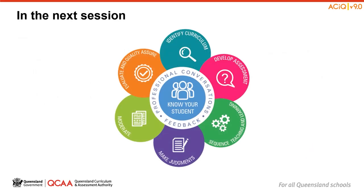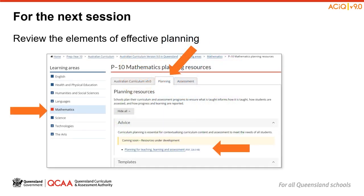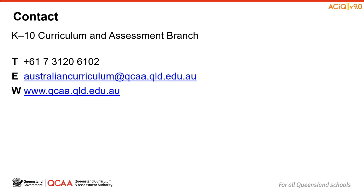That concludes the second session and our discussion on the Curriculum Elements section of Australian Curriculum Version 9 for Mathematics. In the final session of our series on Familiarisation and Planning, we will be discussing how to plan with the revised curriculum. On screen, you will see an infographic that is part of our Elements of Effective Planning resource. You may wish to access this resource to familiarise yourself with its contents prior to the next session. You can see where this resource is available on the QCAA website. If you have any queries regarding the information from this session, please reach out to the K-10 Curriculum and Assessment Branch with the contact details noted on screen. We thank you for your time in completing this session and look forward to working with you in session 3 of the Familiarisation and Planning series.